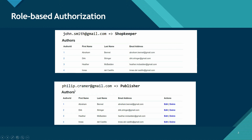What I would like to do is: if a user logging into the system has the publisher role, they should be able to see these links so that only they can delete and edit authors — not others with any other role. We have two users: Philip Kramer and John Smith. John Smith is the shopkeeper and he should not be able to see these links, whereas Philip will see the links and will be able to edit and delete authors.